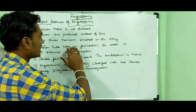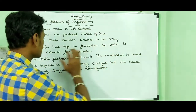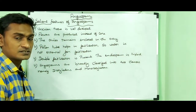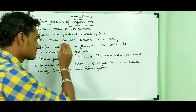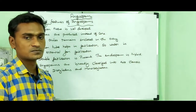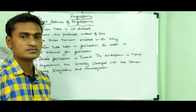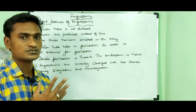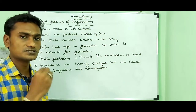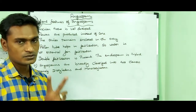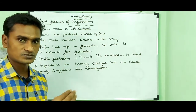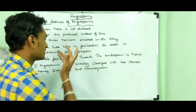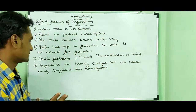Pollen tubes help in fertilization, so water is not essential for fertilization. These plants are called siphonogamous plants. The pollen tube helps in the transfer of the male nucleus into the embryo sac, so water is not essential for fertilization.